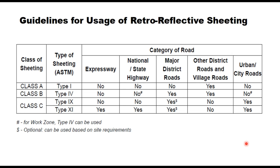IRC 67 provides guidelines for usage of retroreflective sheeting on different types of roads. Class A sheeting can only be used on other district roads and village roads. Class B type 4 sheeting can be used on major district roads and other district roads. Type 11 can be used on expressways, national highways or state highways, and optionally on major district roads — though on major district roads the cheaper type 4 sheet of Class B can be used.